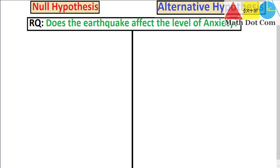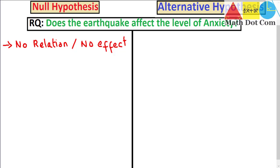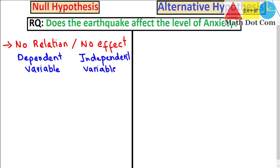The first difference between the null and alternative hypotheses — in very layman terms — is that the null hypothesis basically refers to no relation or no effect. As we have seen, a hypothesis tells you the relation between the dependent and independent variable. Null means zero, so there is no relation between the dependent and independent variable.